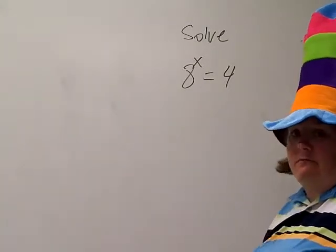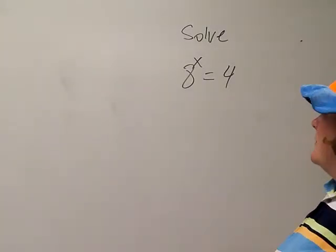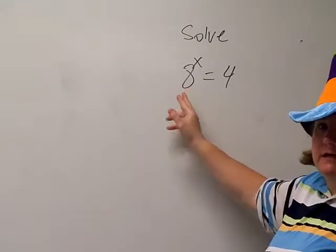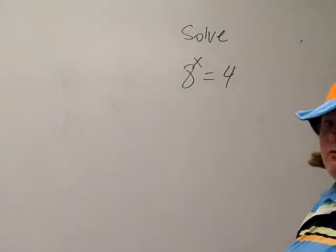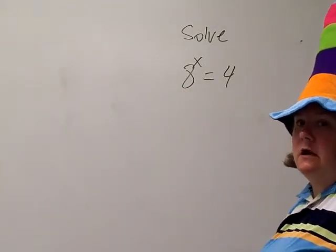A lot of people will look at it and say, well, it's going to be 4. Wrong. 4 to some power doesn't get me 8. 4 to the first is 4, 4 squared is 16. So it's not going to be 4.